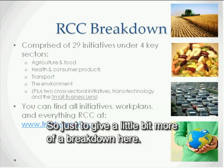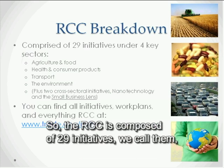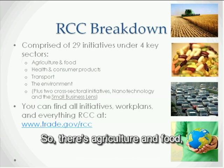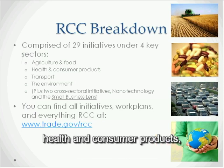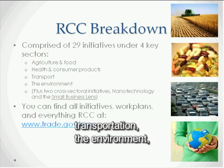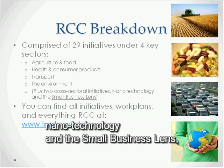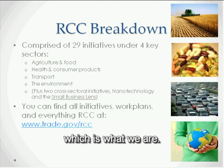The whole rationale for this is that where there's alignment, it's going to promote commerce between the U.S. and Canada simply because it's easier to trade across the border. The RCC is composed of 29 initiatives under four key areas or sectors: agriculture and food, health and consumer products, transportation, the environment, and then two cross-cutting cross-sectoral initiatives — nanotechnology and the small business lens, which is what we are.